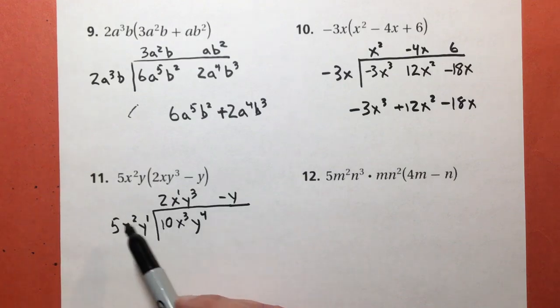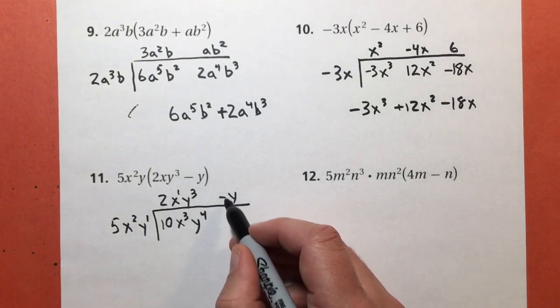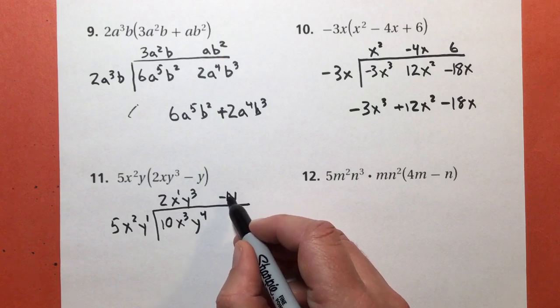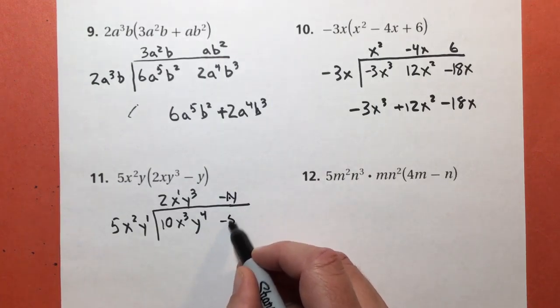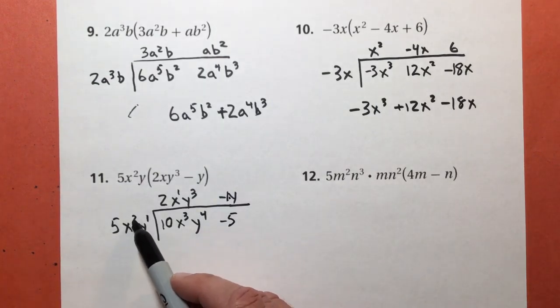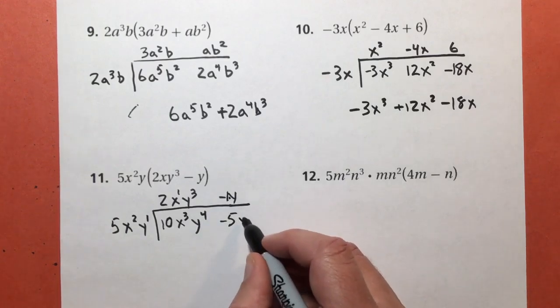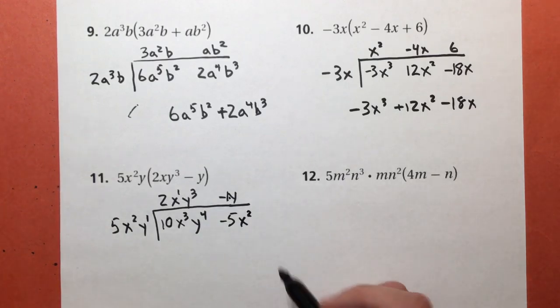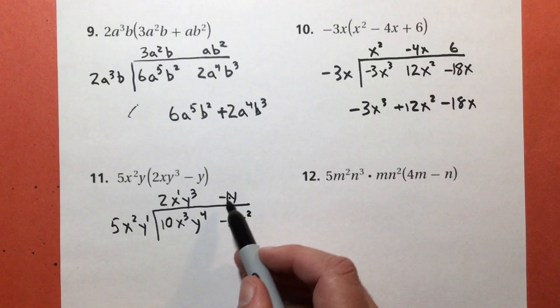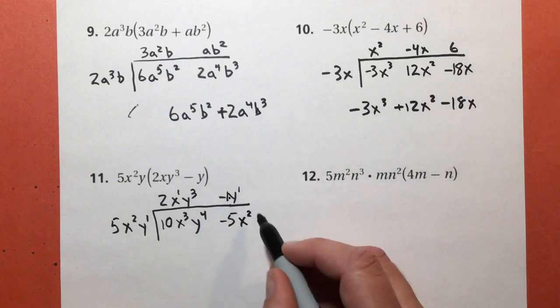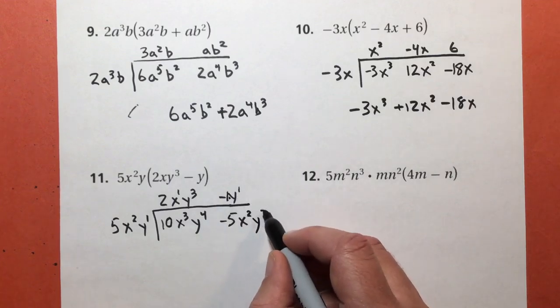Now for the next part. 5 times negative 1, because there's a hidden negative 1 right there, is negative 5. I have x to the second. I don't have any more x's up here, so I still have x to the second. And y to the first times y to the first. 1 plus 1 equals 2. So I get y to the second power.